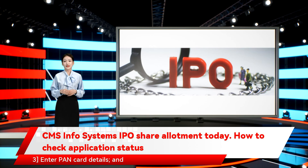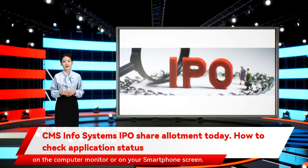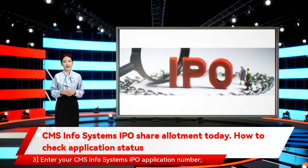Enter your PAN card details and your CMS InfoSystems IPO application status will become available on your computer monitor or smartphone screen. Then enter your CMS InfoSystems IPO application number.